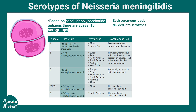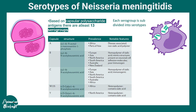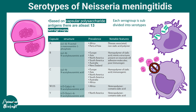Each of these serogroups is further subdivided into serotypes, making them quite diverse. The polysaccharide capsule is particularly important because normally bacteria are engulfed by macrophages or other phagocytic cells, but due to this polysaccharide, these bacteria can evade phagocytosis, making them more virulent.